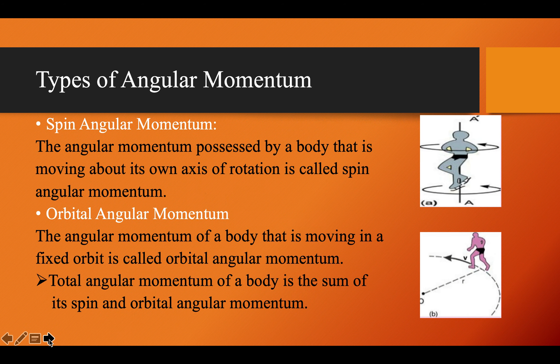Next we discuss types of angular momentum. Angular motion is of two types: spin motion, in which a body rotates about its own axis, and orbital motion, in which a body moves in a certain orbit. For example, the Earth has both spin and orbital motion. Due to spin motion, Earth completes one rotation in 24 hours; due to orbital motion around the Sun, it completes one revolution in 365 days. Momentum due to spin motion is called spin angular momentum, and due to orbital motion is called orbital angular momentum.